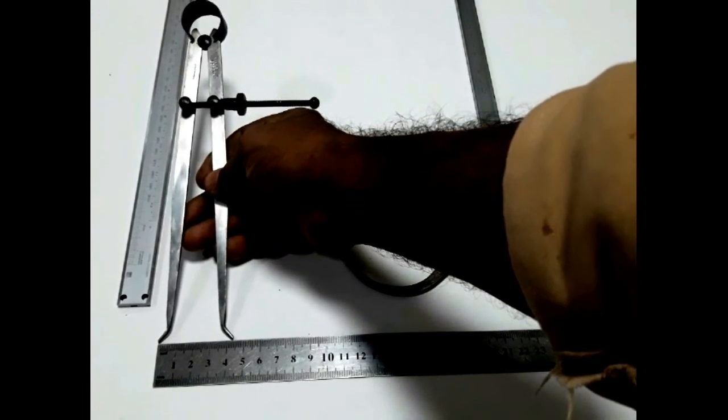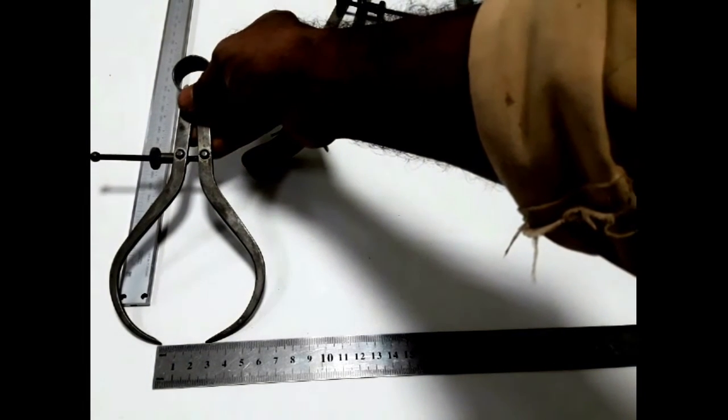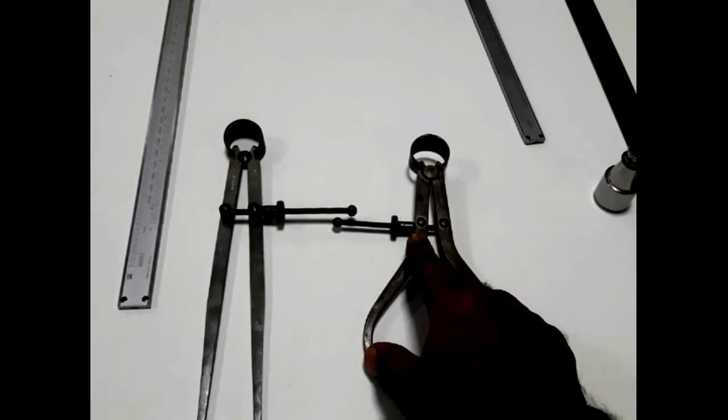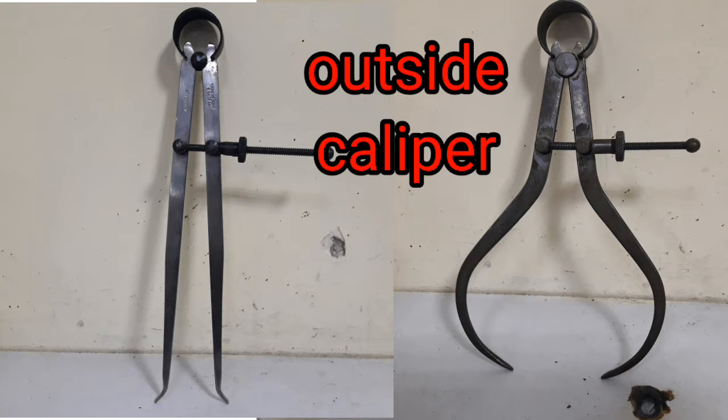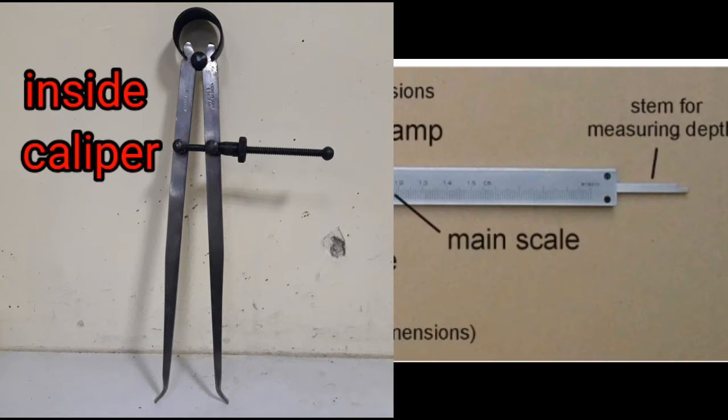But calipers are in direct reading semi-precision measuring instruments. A caliper attached with a vernier scale can be called as a vernier caliper. A vernier caliper is a precision measuring instrument.